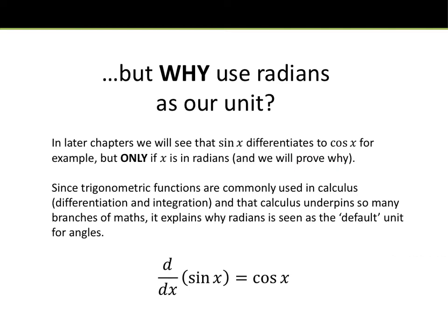So why do we use radians? Later on, we're going to find out that sine differentiates to cos. We're going to start differentiating trig functions and all sorts — it's going to be amazing. Because we normally use trig functions in calculus, radians are used as a default unit for the angle instead of degrees. If we just used 0 to 360 degrees, it wouldn't really correlate with a graph if we were looking at the intersections of a sine graph and a quadratic at the same time — they would both need to be in the same unit, and radians allow us to do that.